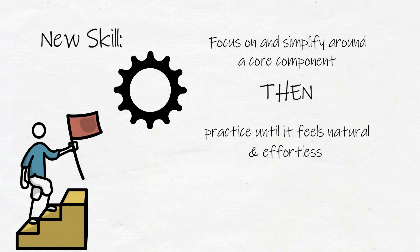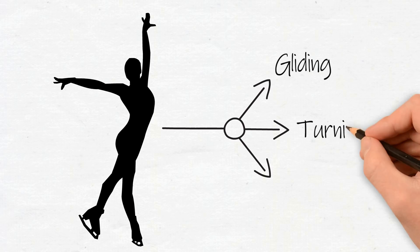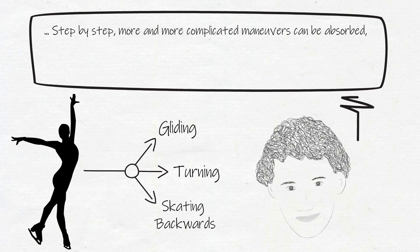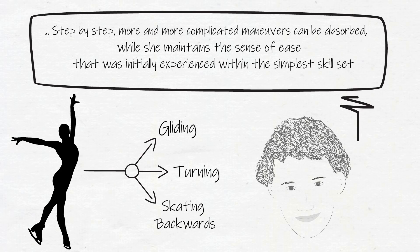In the book, Josh says a figure skater should begin with the fundamentals of gliding along the ice, turning, and skating backwards with deepening relaxation. Then step by step, more and more complicated maneuvers can be absorbed, while she maintains the sense of ease that was initially experienced within the simplest skill set.